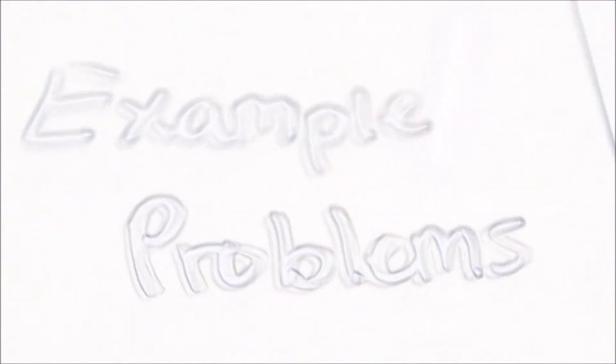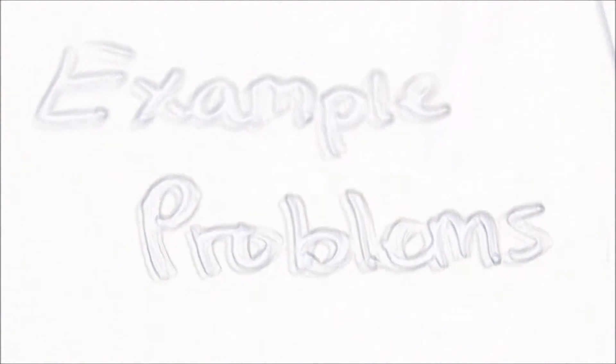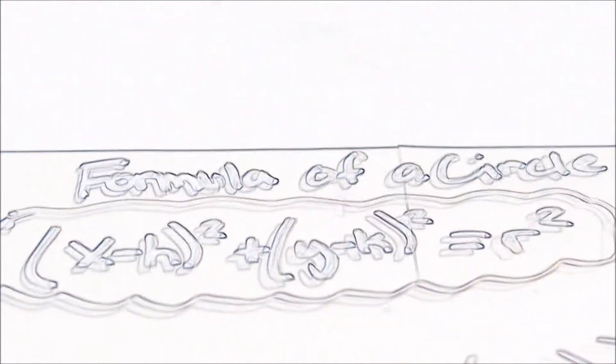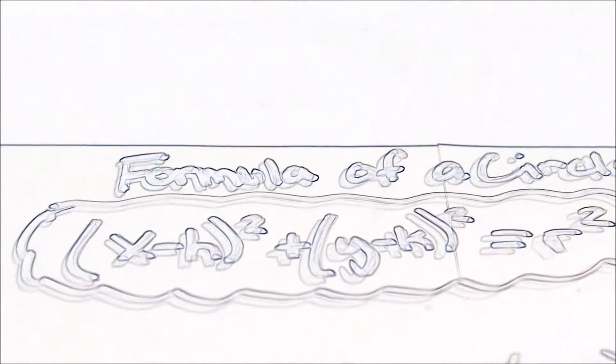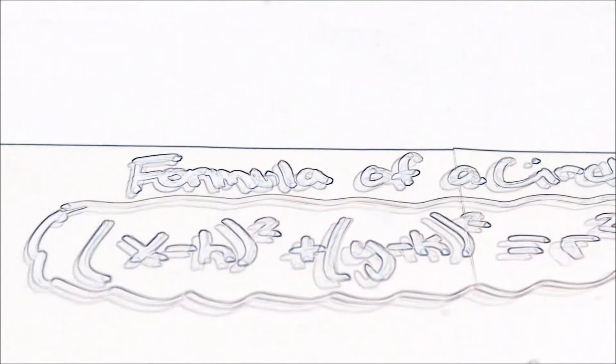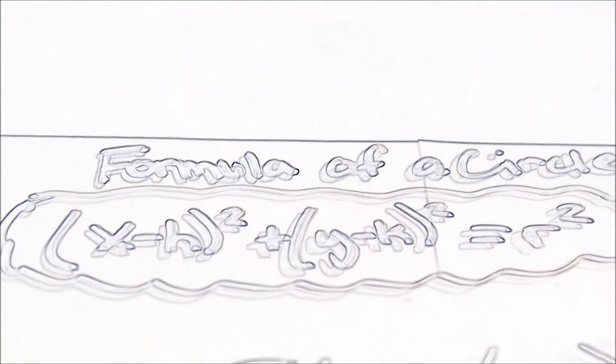Let's do a couple of example problems. The first example problem will be the equation of the circle. The formula of a circle is x minus h to the second plus y minus k to the second equals r squared.